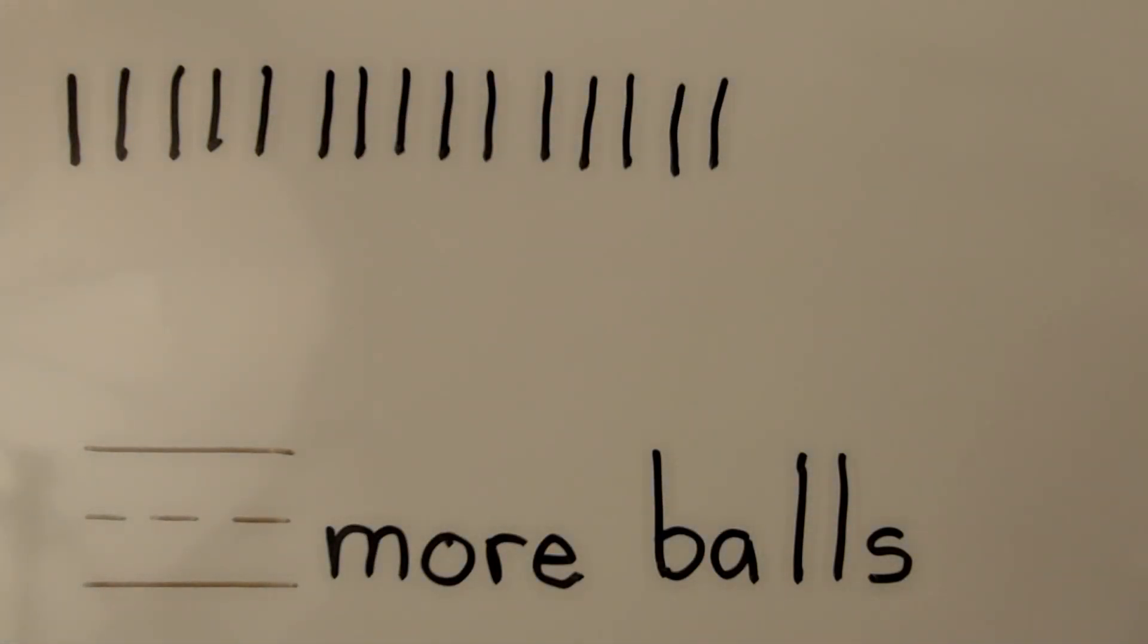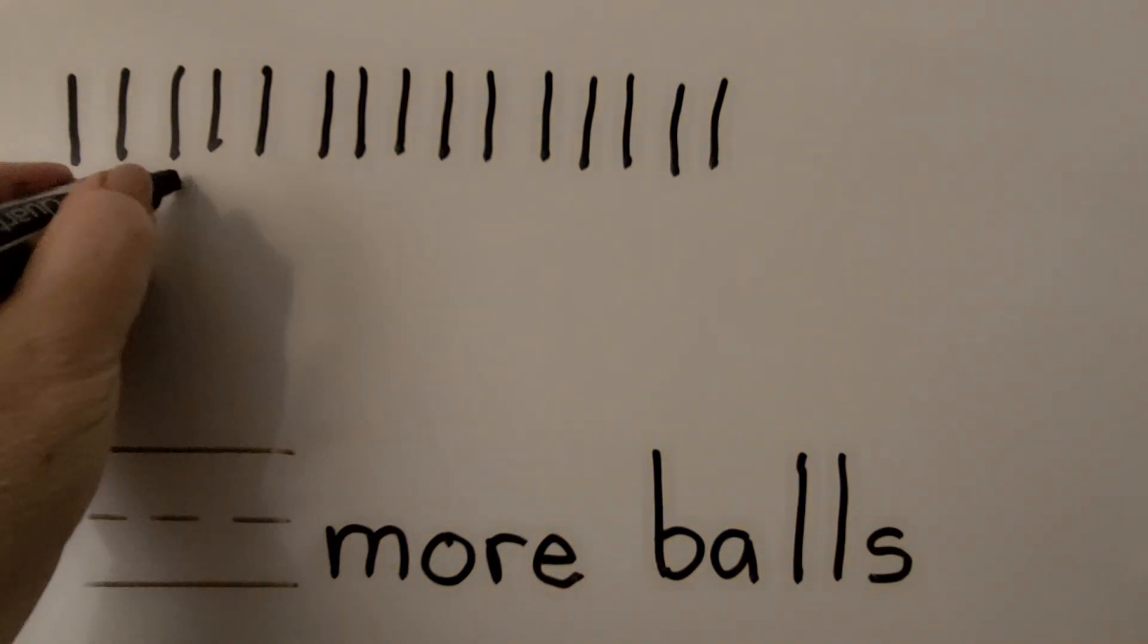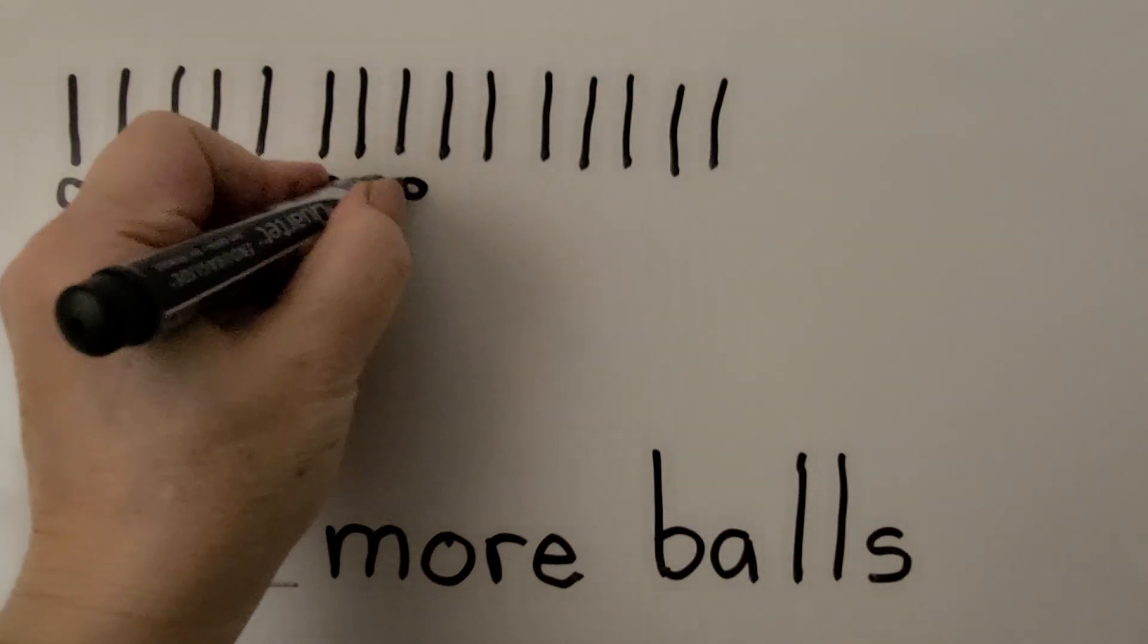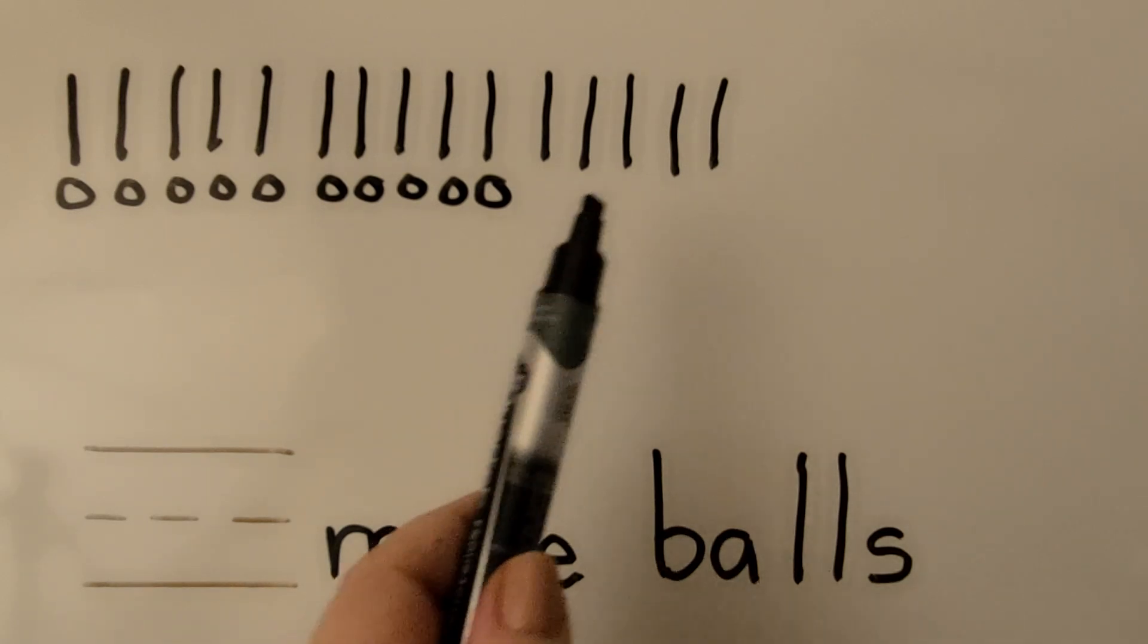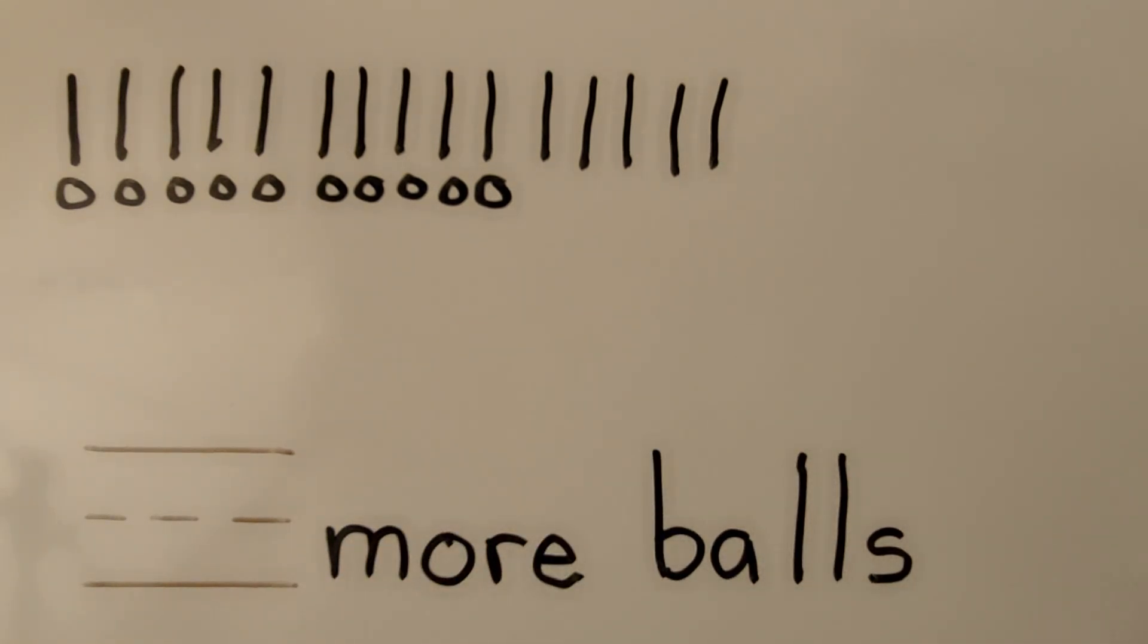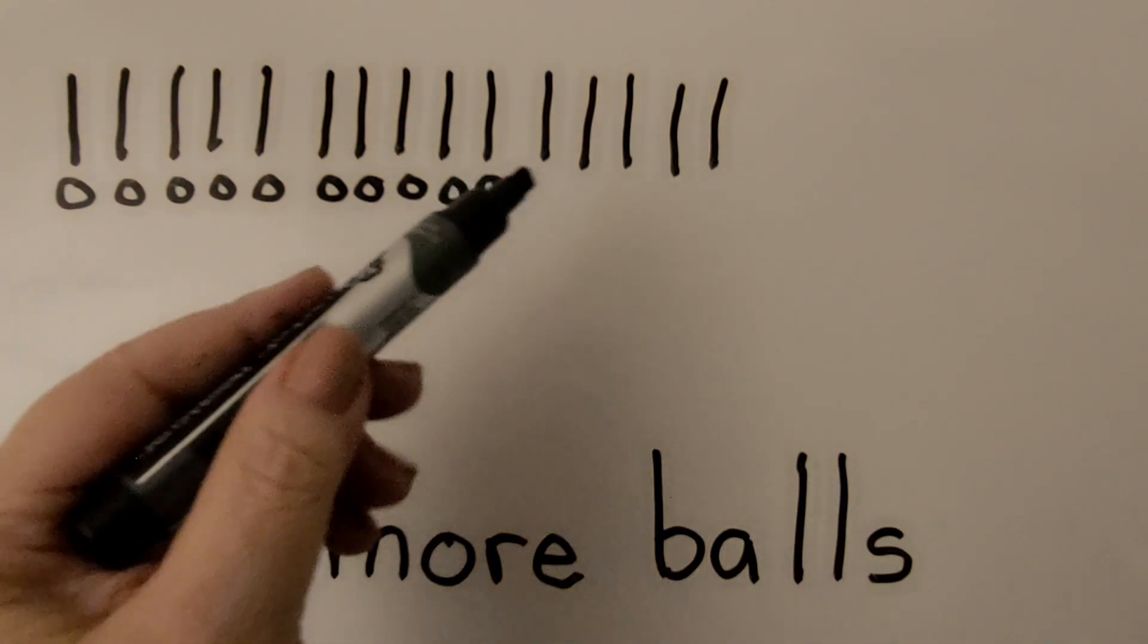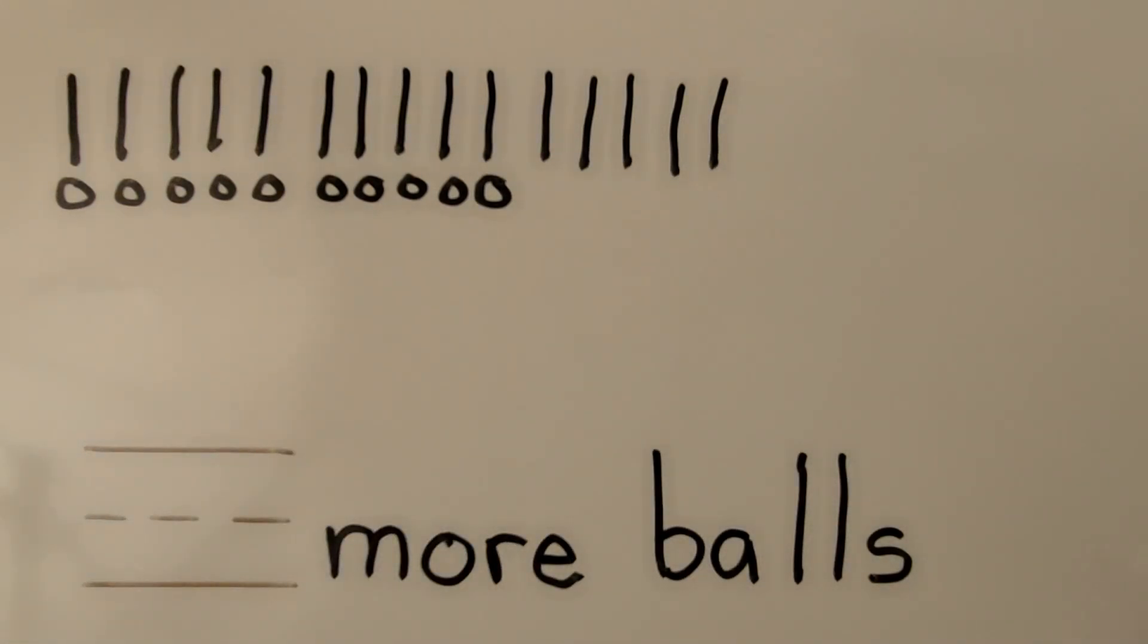That can be the 15 children. Then we can draw a circle by 10 of the lines to be a ball next to 10 of the children. Counting 1, 2, 3, 4, 5, 6, 7, 8, 9, 10. Then we can count how many more balls are needed. These children don't have a ball. How many more do we need so that they will each have one? There are 1, 2, 3, 4, 5 lines for 5 children that would be without a ball.